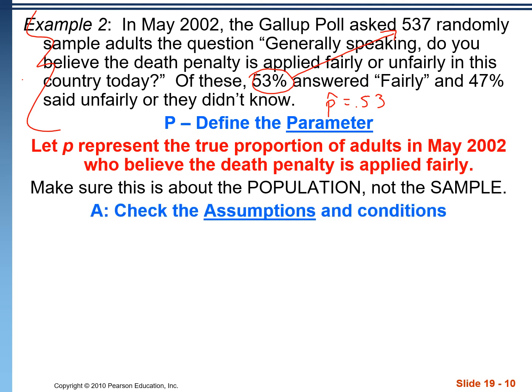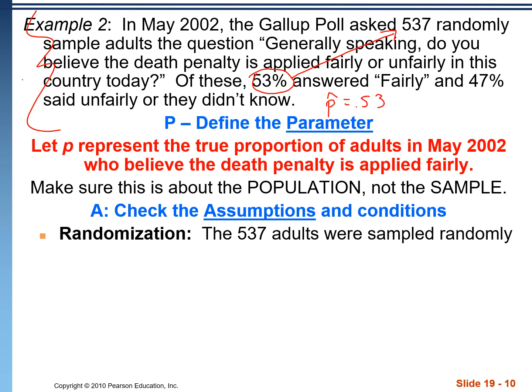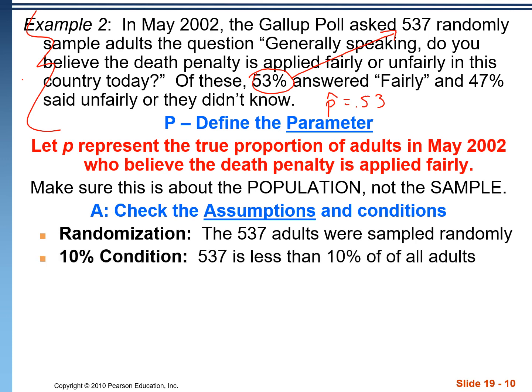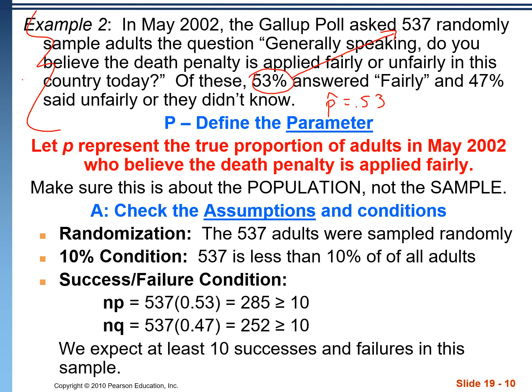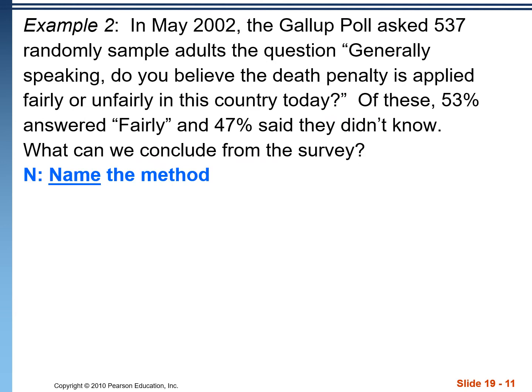Check the assumptions and conditions, just like we did with sampling distributions. Randomization: the 537 adults were sampled randomly. 10% condition: 537 is less than 10% of all adults. Success-failure condition: we check that we expect at least 10 successes and 10 failures.